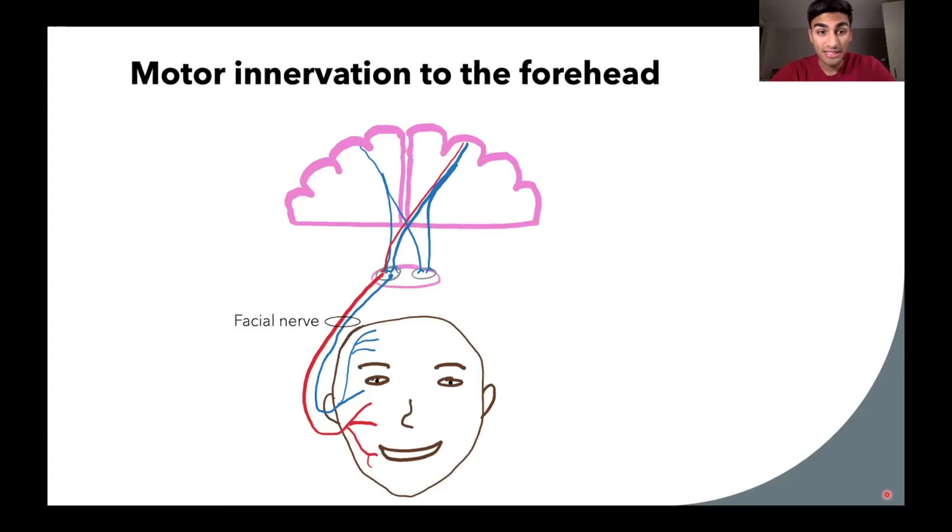All right, now let's get into how the forehead receives motor control, how the motor innervation works. Here at the top, this is a representation of our brain, and then here is our face. The nerve cells are represented on this pathway, and the nerve cells we call neurons. The red, if we trace it down, is providing control to the lower face, and the blue is providing control to the upper face or the forehead. Also notice that we have an upper motor neuron and lower motor neuron. This lower motor neuron in this case is what we call the facial nerve.